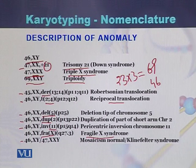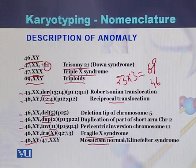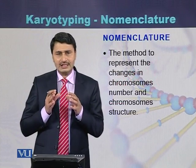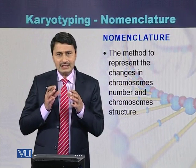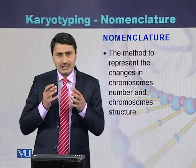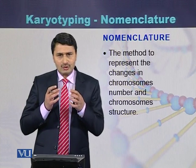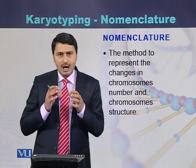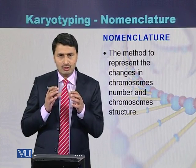In the case of 46,XY/47,XXY, this represents mosaics — 46,XY represents individuals with a normal number of chromosomes, while 47,XXY represents Klinefelter syndrome. These are all descriptions of anomalies usually seen during karyotyping of humans. Nomenclature is a process by which we can detect where a deletion occurs in a chromosome and how to represent any abnormalities in the chromosomes.